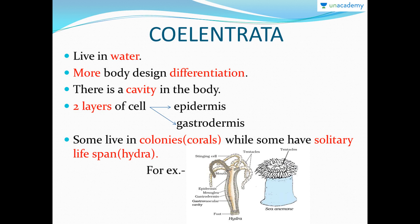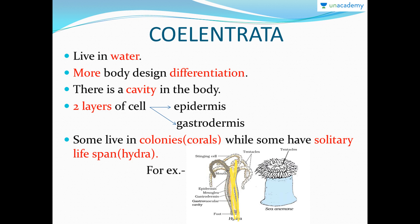The next group is Coelenterata. They live in water only. Their body is more differentiated — this is tissue level of organization. There is an inner cavity in the body, but no true coelom. There are two layers: the outside layer is the epidermis, and the layer lining the inner cavity is the gastrodermis. Some of them live in colonies, for example corals, and some live individually, for example hydra. In hydra you can see the inner cavity and the two cell layers clearly.